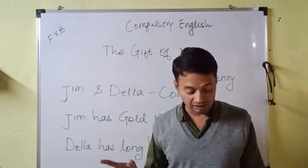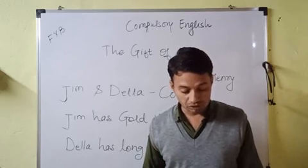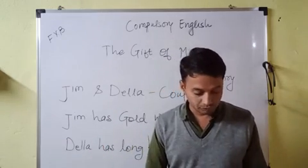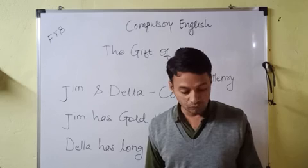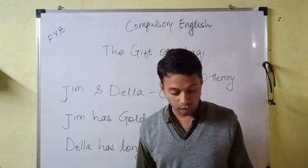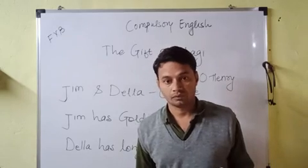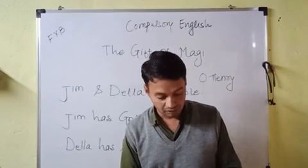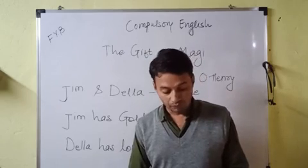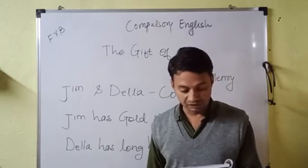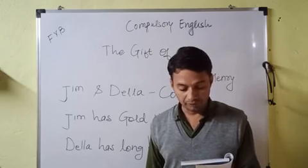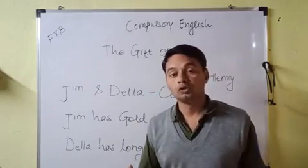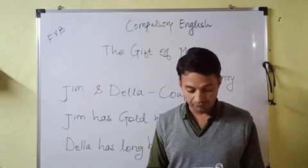Next, she was ransacking the stores for Jim's present. She found it at last. It surely had been made for Jim and no one else. There was no other like it in the stores. She had turned all of them inside out. It was a platinum fob chain, a platinum chain. When Della reached home, her intoxication gave way a little to prudence and reason. She got out her curling irons and went to work repairing the ravages made by generosity added to love.